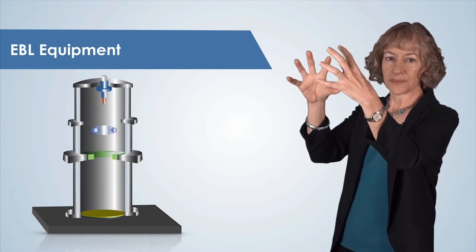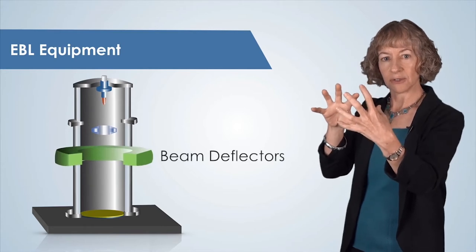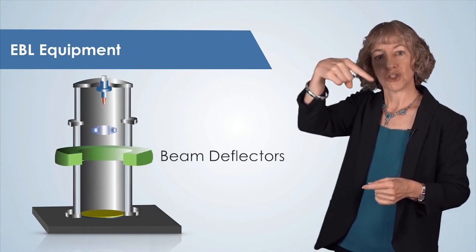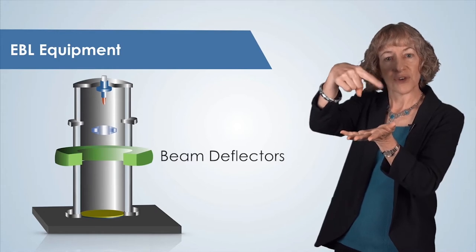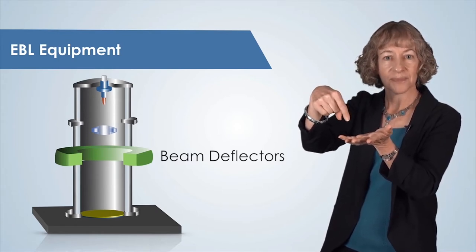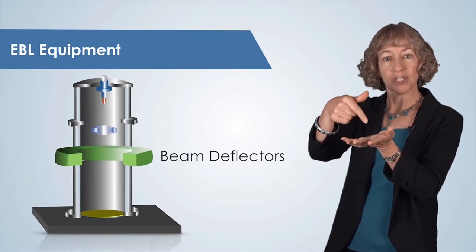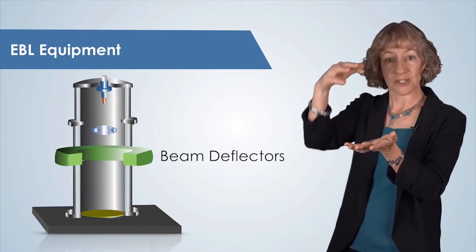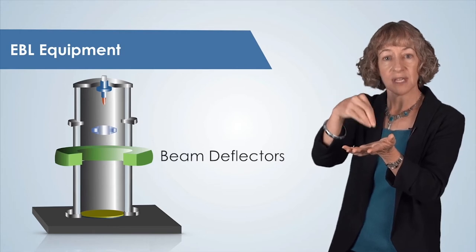Now, below the lens system is a set of beam deflectors. Beam deflectors can electronically deflect the focused beam of electrons at extremely high speeds. This controls the position of the electron beam, allowing the beam to be steered to different regions of the substrate.